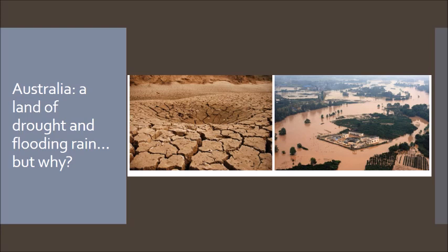In most countries, in most places in the world, the climate is quite stable from year to year and you know what to expect. Drought is something that is extremely rare. However, in Australia it's something that is a little bit more common for a few reasons, and we're going to talk about those reasons over the next week.